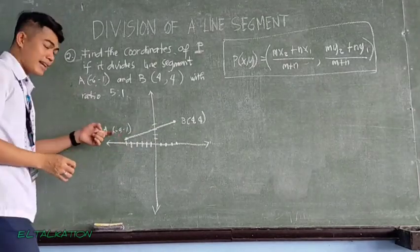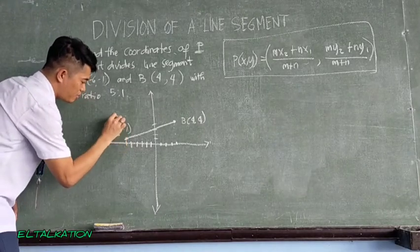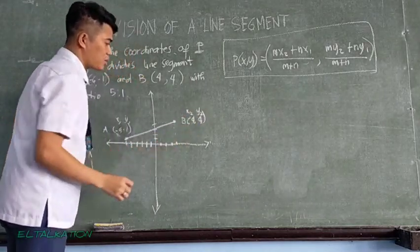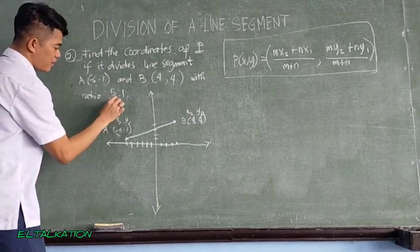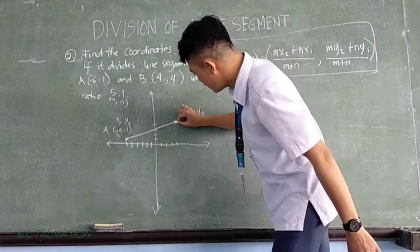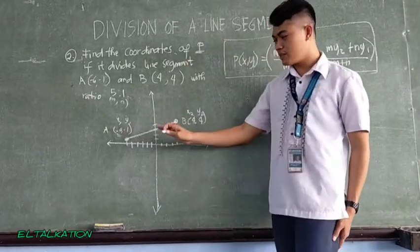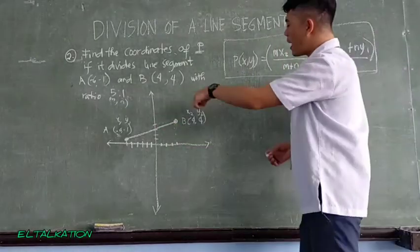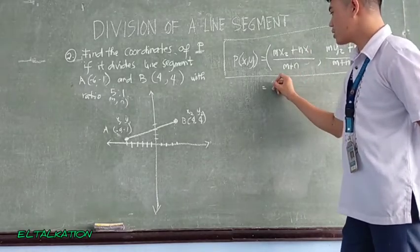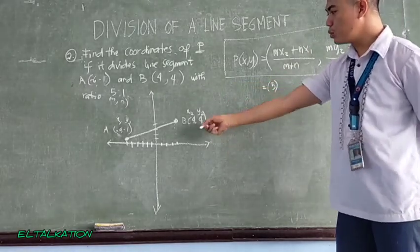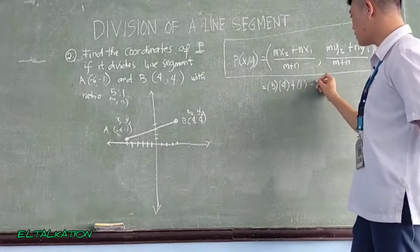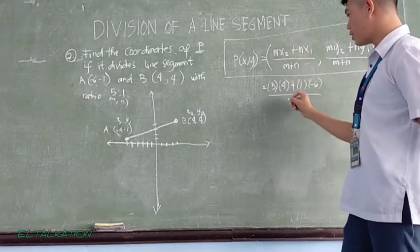Okay, so given this example, negative 6 is x sub 1, negative 1 is y sub 1. Here, 4 is x sub 2, 4 is y sub 2. So our M is 5 and our N is 1. Okay, let's substitute to the values para mas maintindihan natin kung saan ang division or the point in the middle. So let's have M as 5, substitute. Same formula as the internal division. So M which is 5 times x sub 2 which is 4, plus N which is 1, then x sub 1 is negative 6, all over M plus N or 5 plus 1.